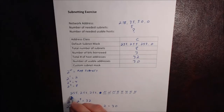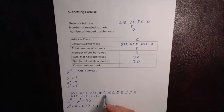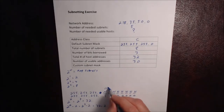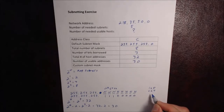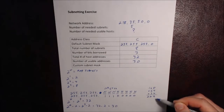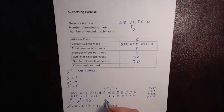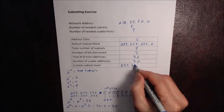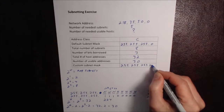To find our custom subnet mask, we start with 255.255.255 and wherever we have an N for network, those are going to be one bits — so that's one, one, one. Our host bits are going to be zeros. The bit values are 128, 64, 32, and so on. In this case, 128 plus 64 is 192, plus 32 gives us 224. The more you practice, the faster this gets. So our custom subnet mask is 255.255.255.224.